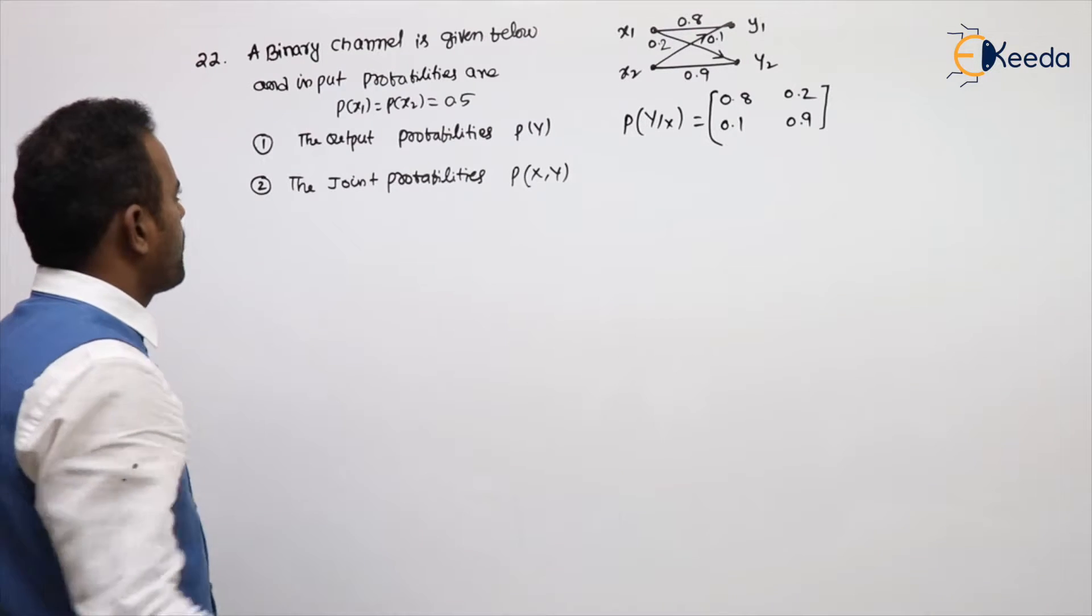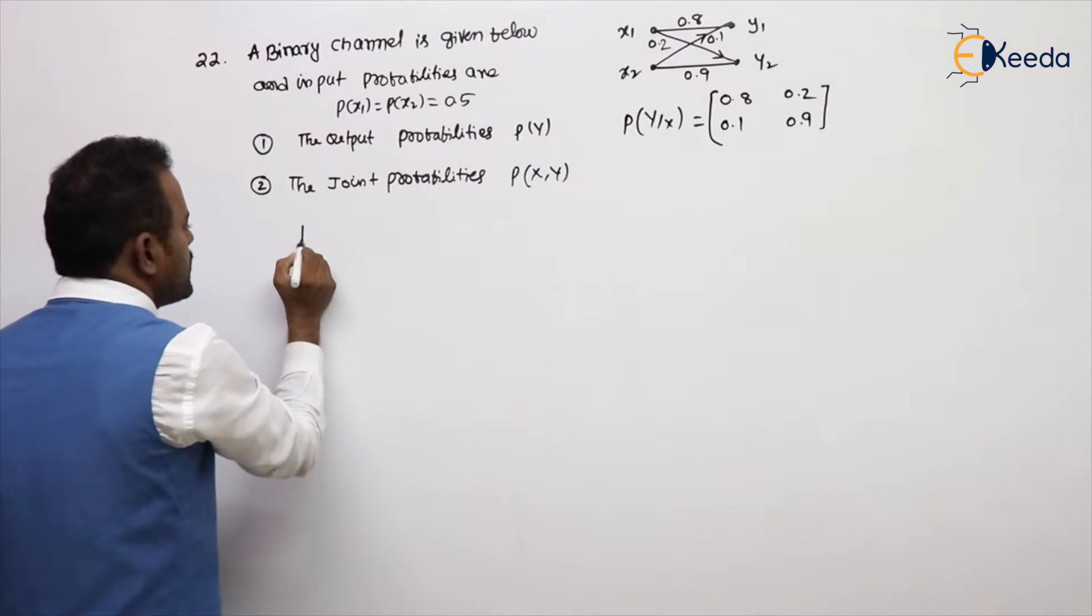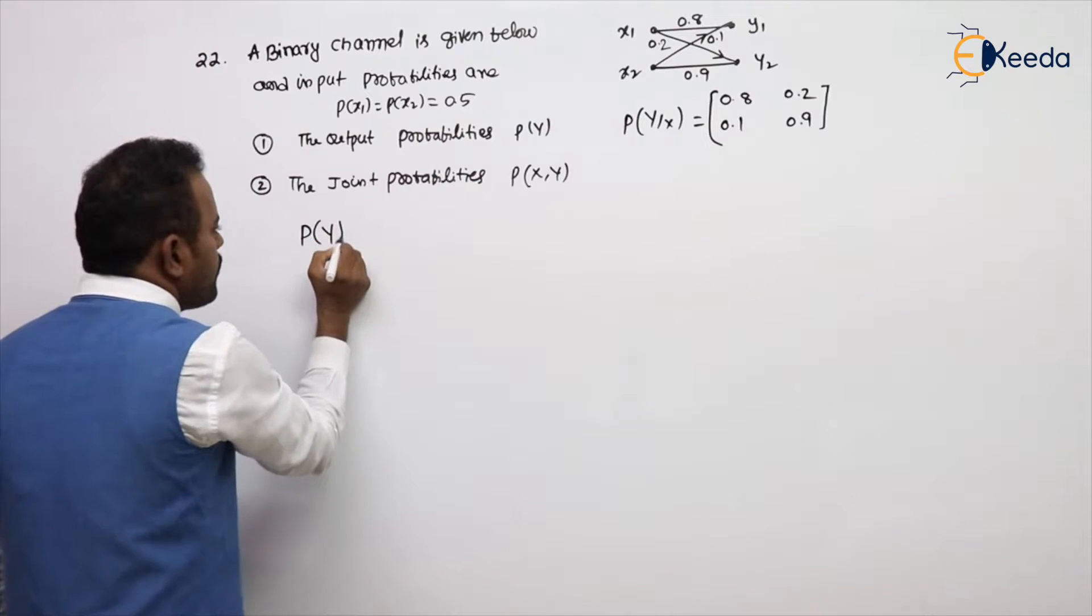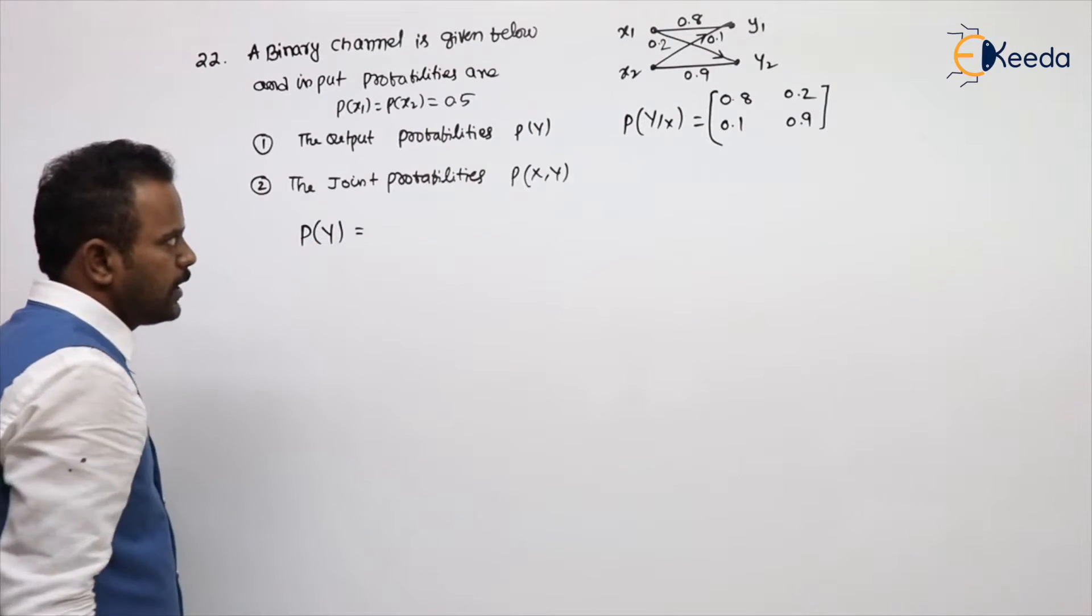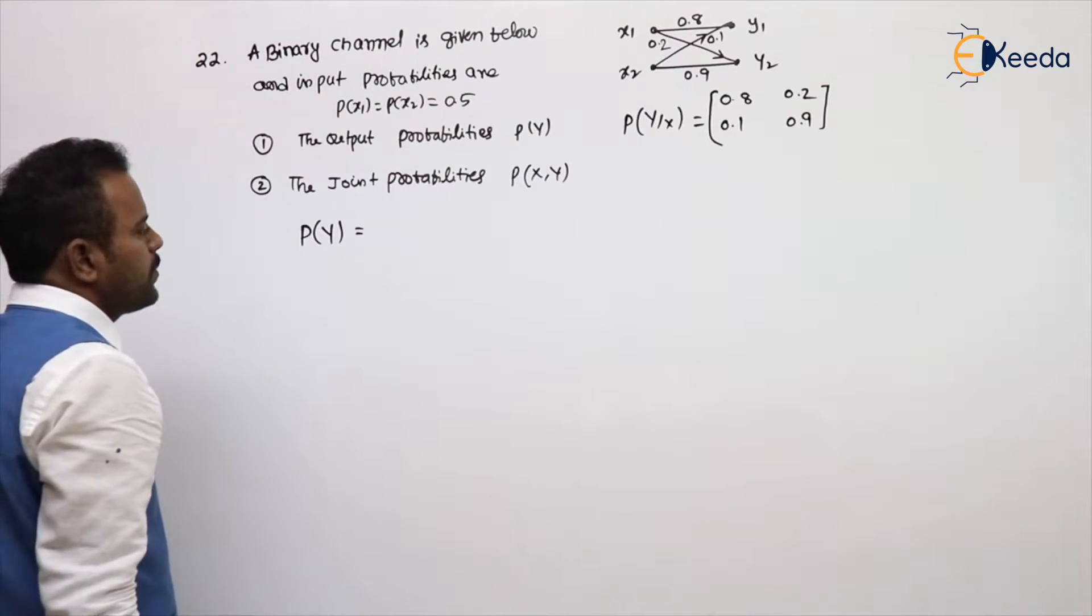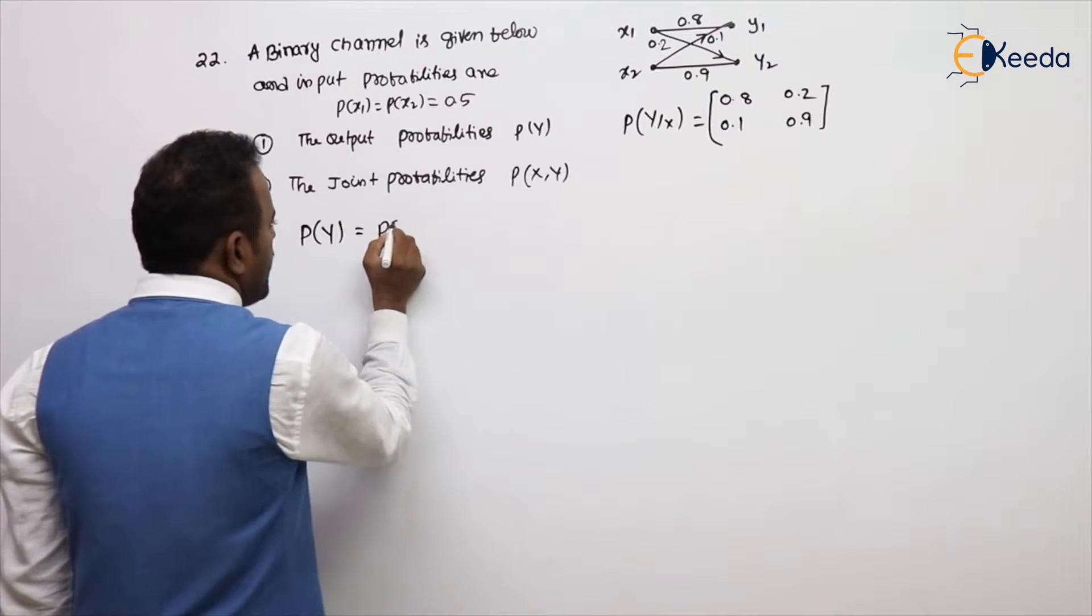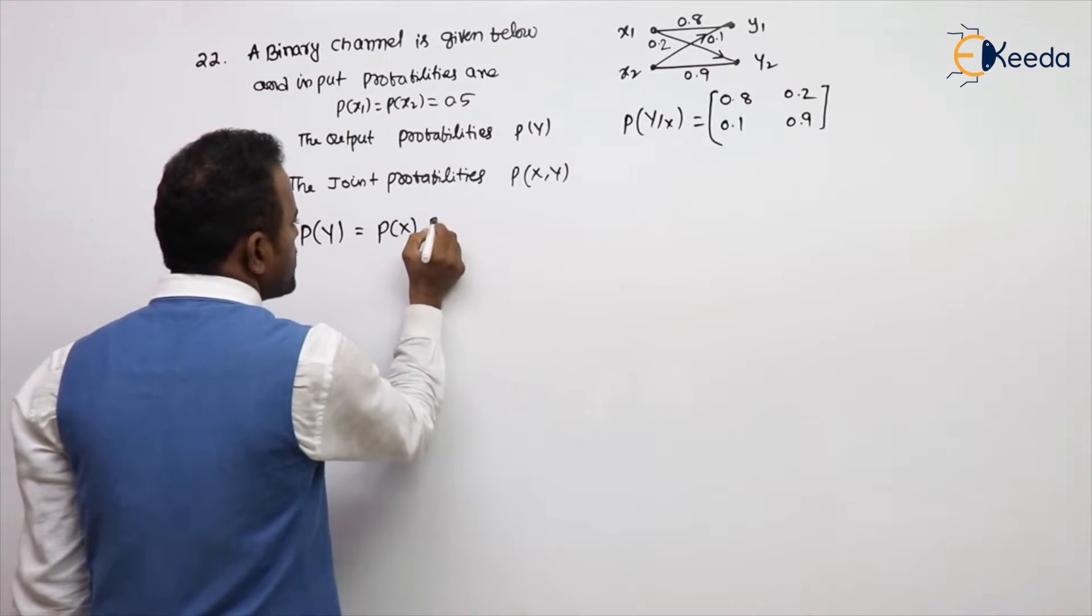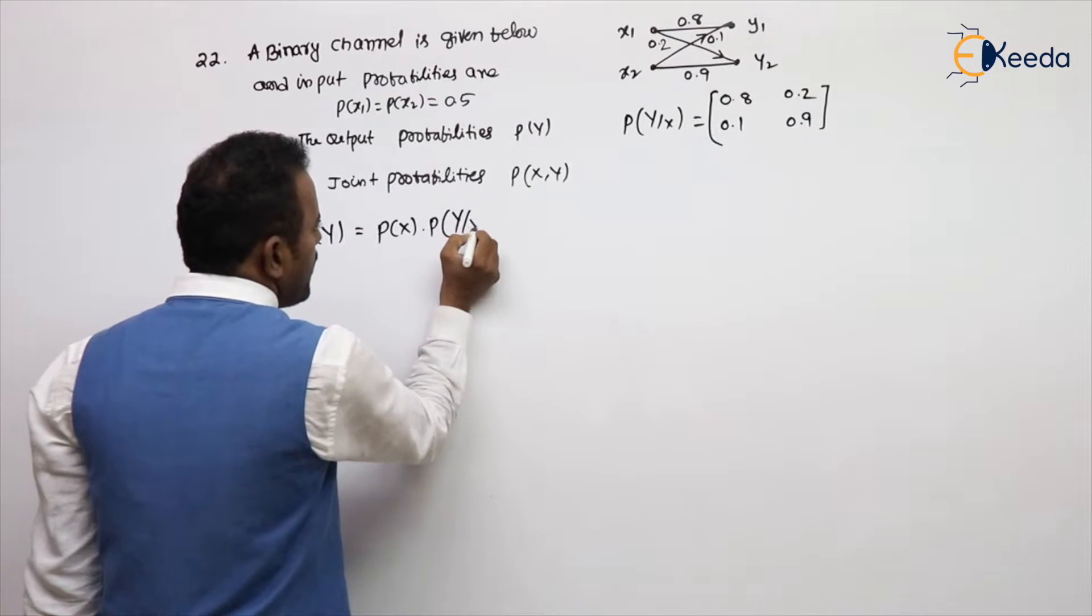Now follow. Calculate the output probabilities. What is P(y) equal to? The output probability P(y), what I told, the input probability is P(x) into P(y|x).